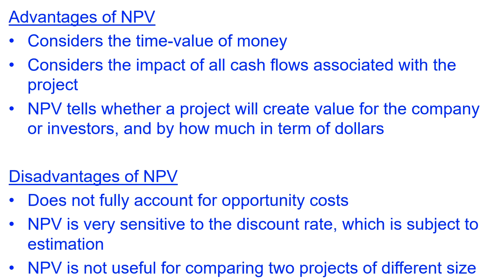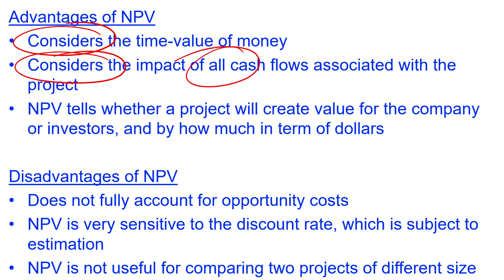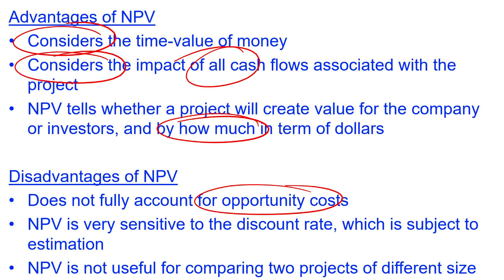Advantages of the net present value method: it does consider the time value of money; it considers the impact of all cash flows associated with the project, including those after the payback period; and net present value tells whether a project will create value for the company or investors and by how much in dollars — that's a key advantage. Disadvantages of NPV: it does not fully account for opportunity costs; it is very sensitive to the discount rate, which is subject to estimation; and it is not useful for comparing two projects of different sizes. Again, we only needed two, but the suggested answer over-answered here.